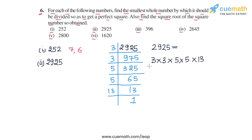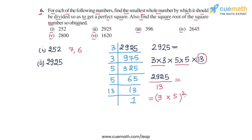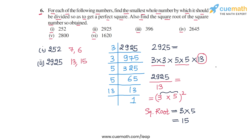Pairing up the prime factors of 2925, we have a pair of 3 and a pair of 5, but 13 is left unpaired. So we divide 2925 by 13 to get a perfect square. We are left with a pair of 3 and a pair of 5, written as (3 × 5)². The square root of the resulting number is 3 × 5 = 15. So we divide 2925 by 13 to get a perfect square, and the square root is 15.